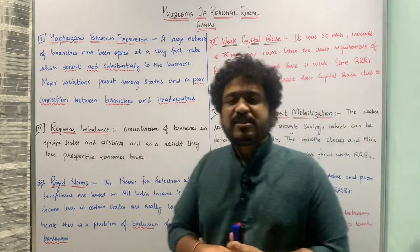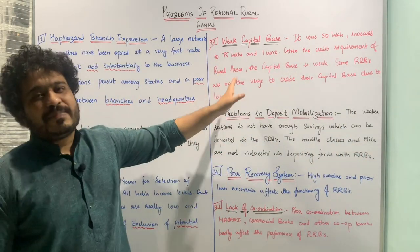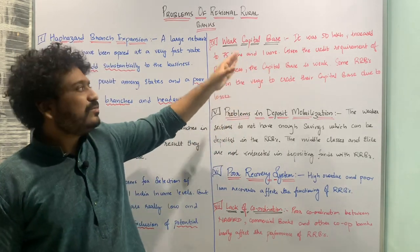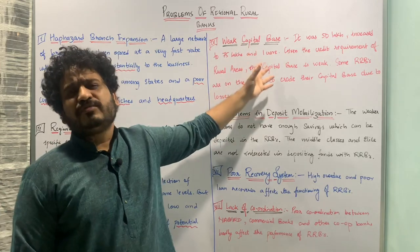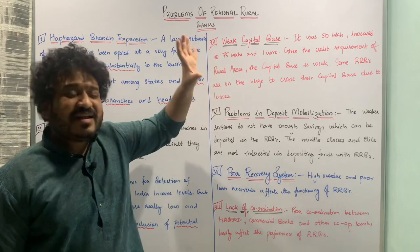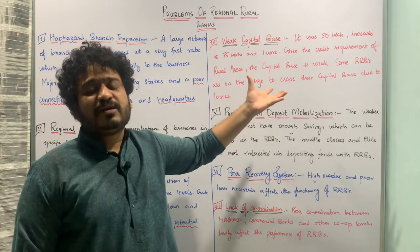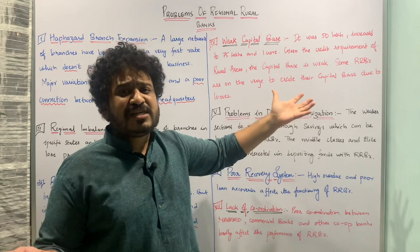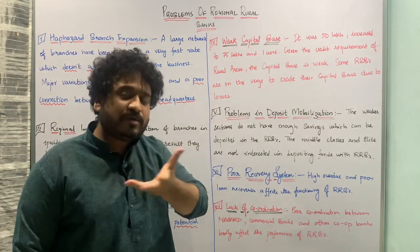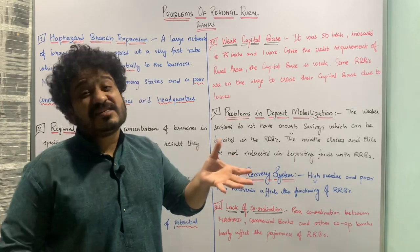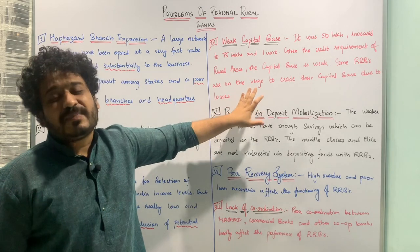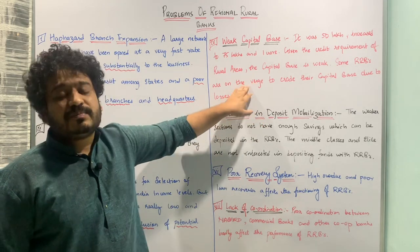The next point is weak capital base. When you look at the capital base of regional rural banks, it was initially set at 50 lakh rupees, then moved to 75 lakhs, and then to one crore. However, the credit requirements of rural areas are huge. If the capital base is not good enough, there is insufficient capital to circulate in the market when required, which erodes the capital base of the bank.